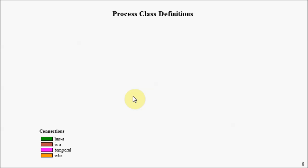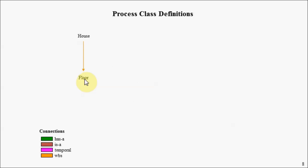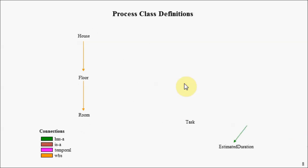So let's now define a process for creating a house. We start with a house entity, which becomes a record in the class table. We have the notion of a floor and a work breakdown structure connection between them. A floor is broken down into one or more rooms — all records in our class table. We'll introduce the notion of a task, and the task will have a property called estimated duration.